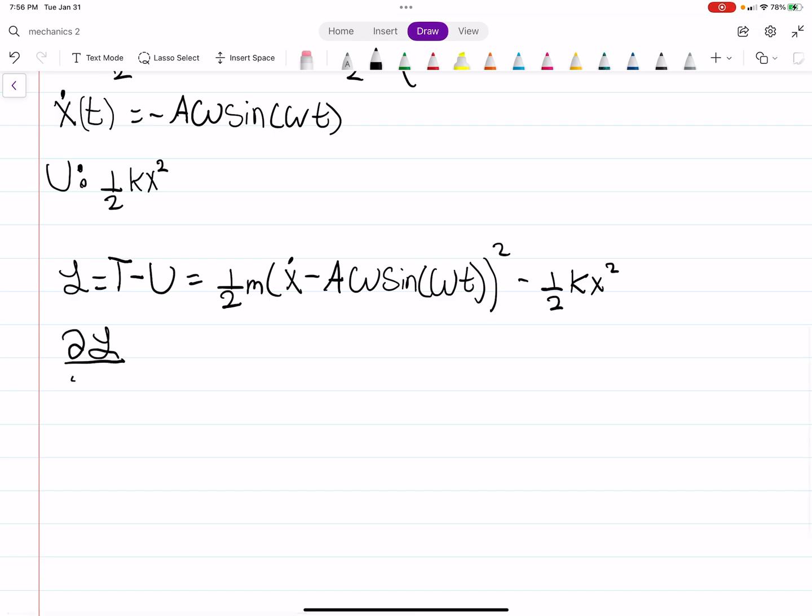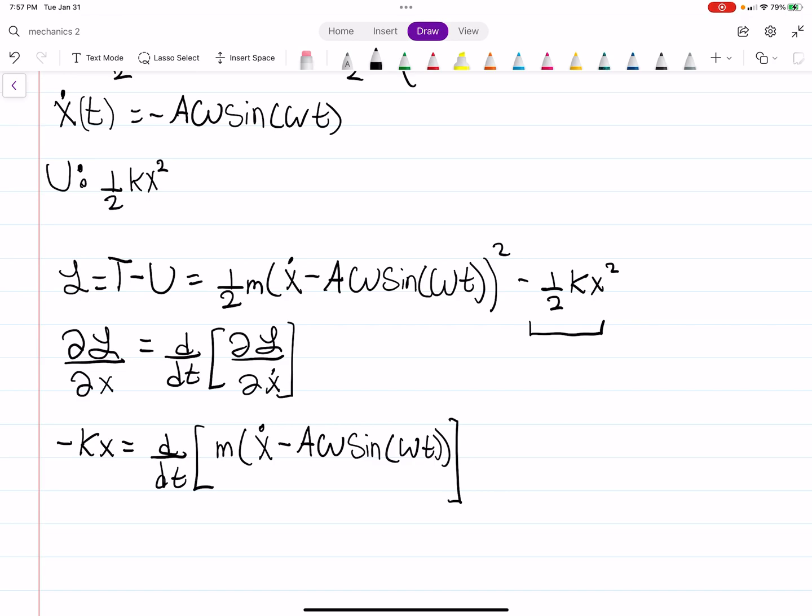The partial derivative of our Lagrangian with respect to X is equal to D by DT, the partial derivative of our Lagrangian with respect to X dot. So with respect to X, we only have this term. That will be minus KX is equal to the time derivative. And then what we're going to have to do is a chain rule here. Derivative of the outside, you get M times X dot minus A omega sine omega T, raised to the first power. And then we need to multiply by the derivative of the inside with respect to X dot, which is going to be just 1. With that in mind, let's close that off here.